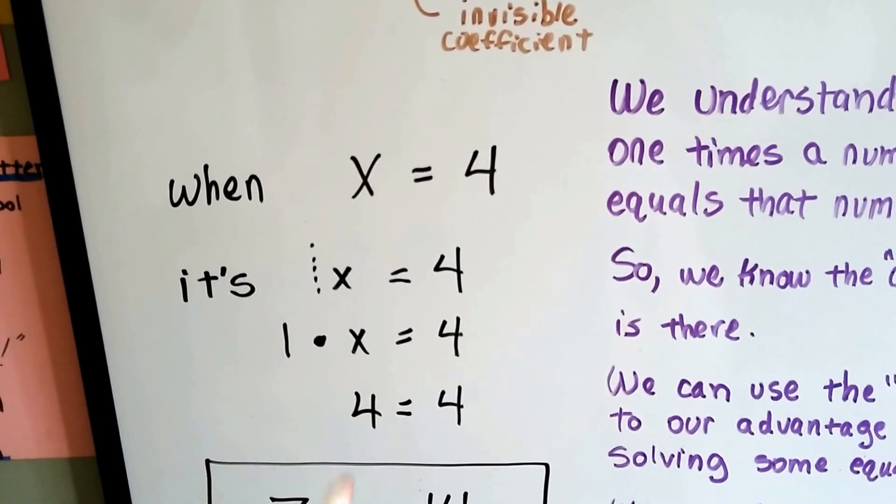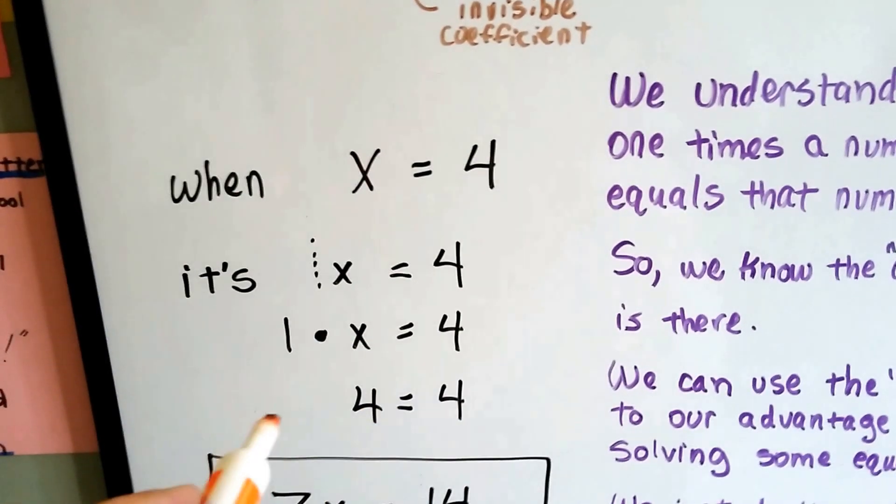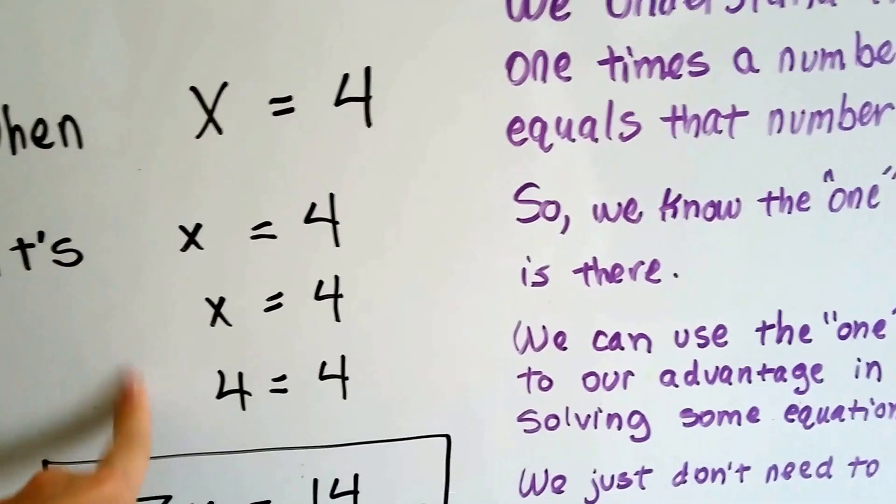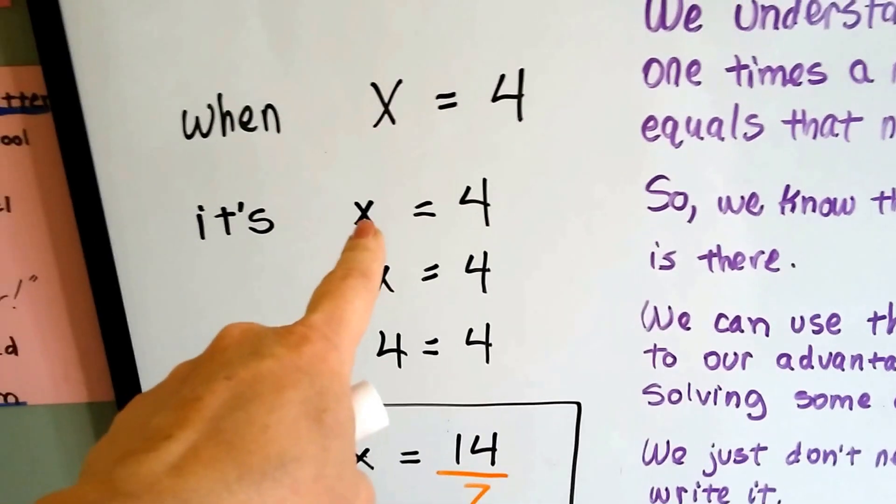Well, we don't need to do 1 times x. We can see there's 1x. And if x is equal to 4, we don't need to say 1 times 4 equals 4. So we don't put the 1. We just use the x.